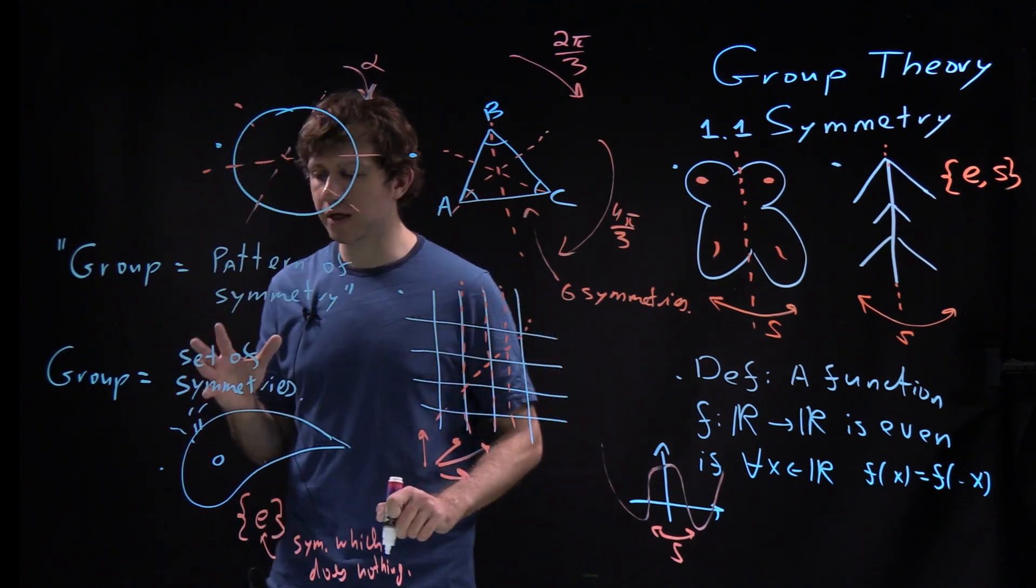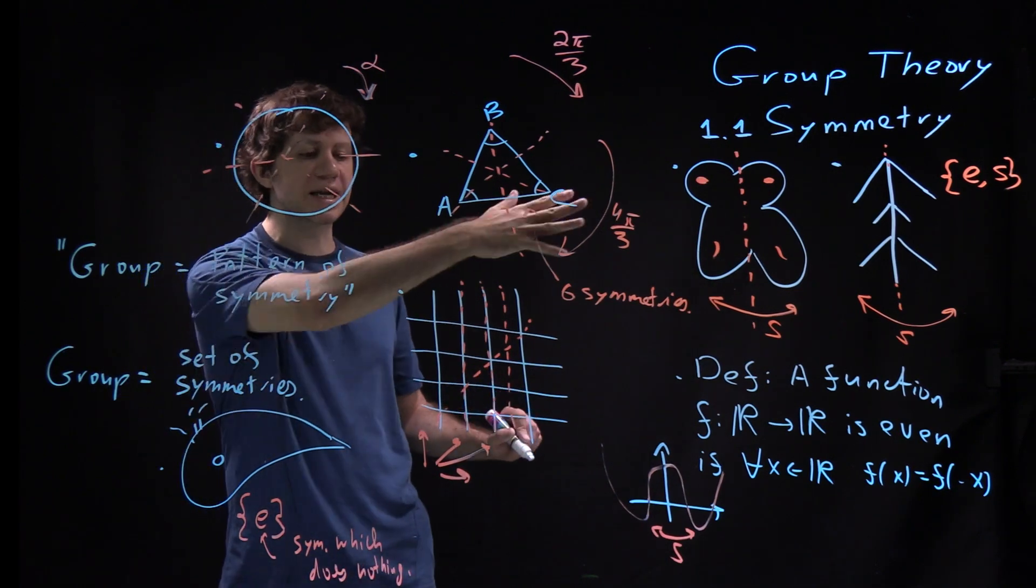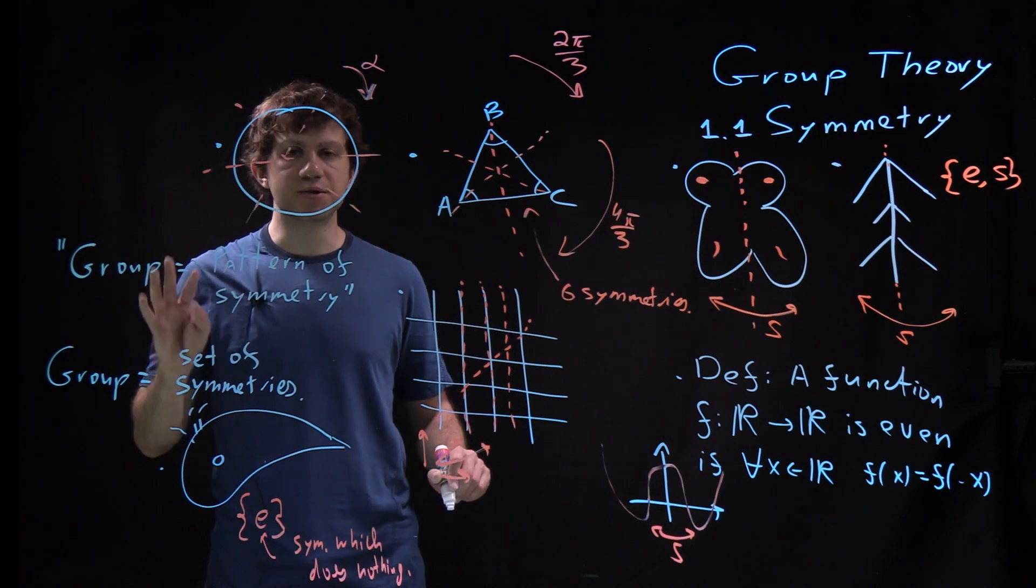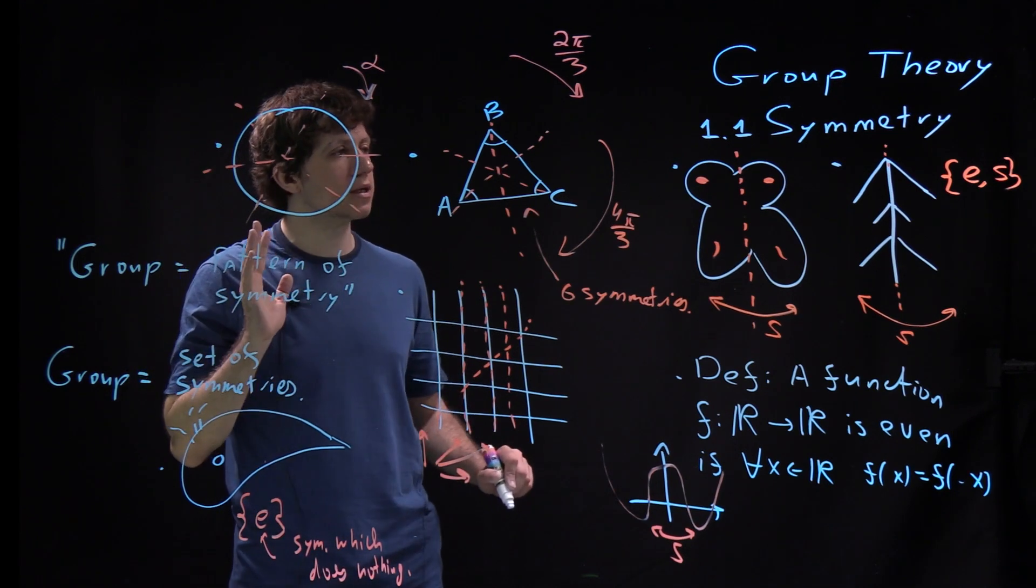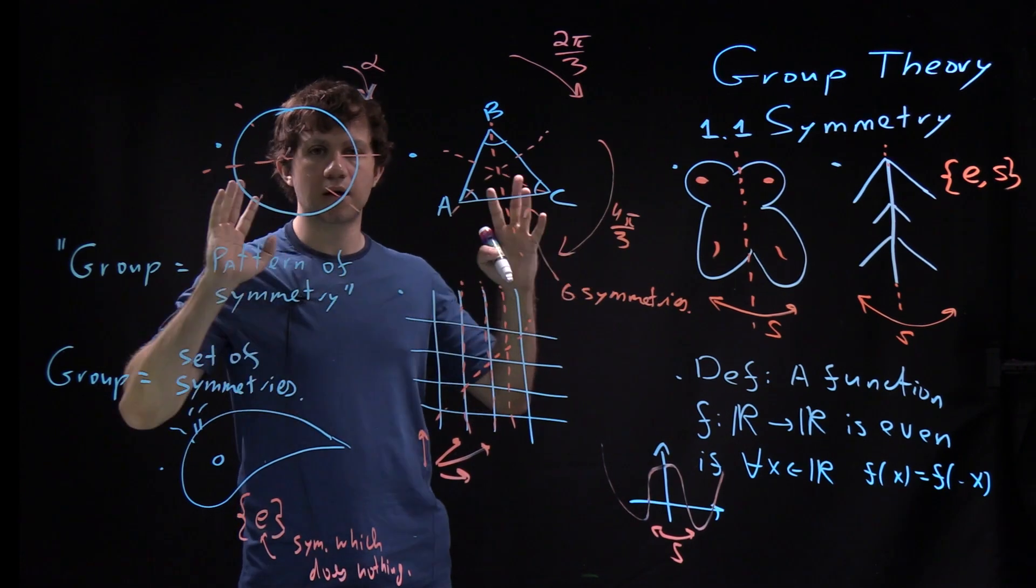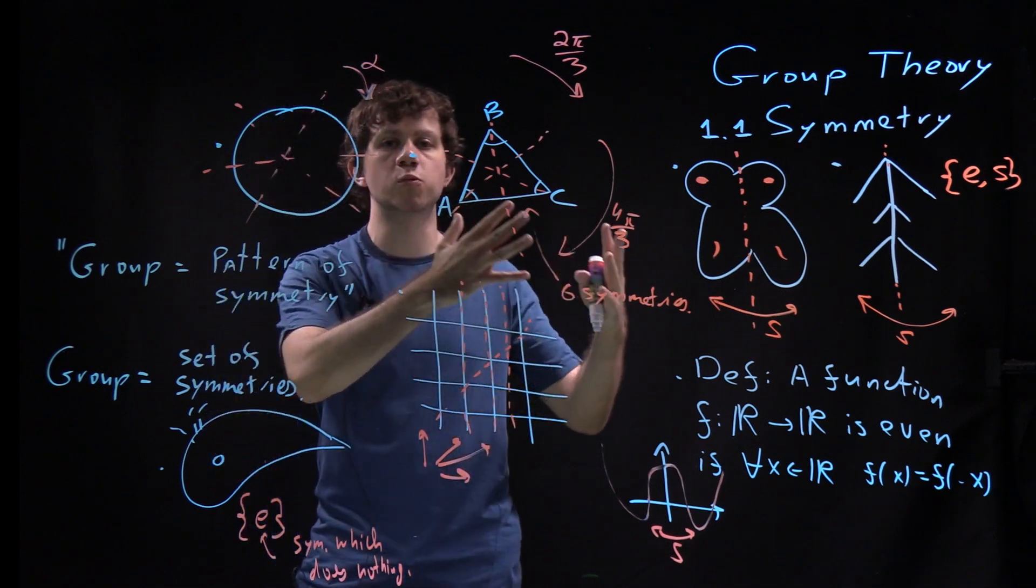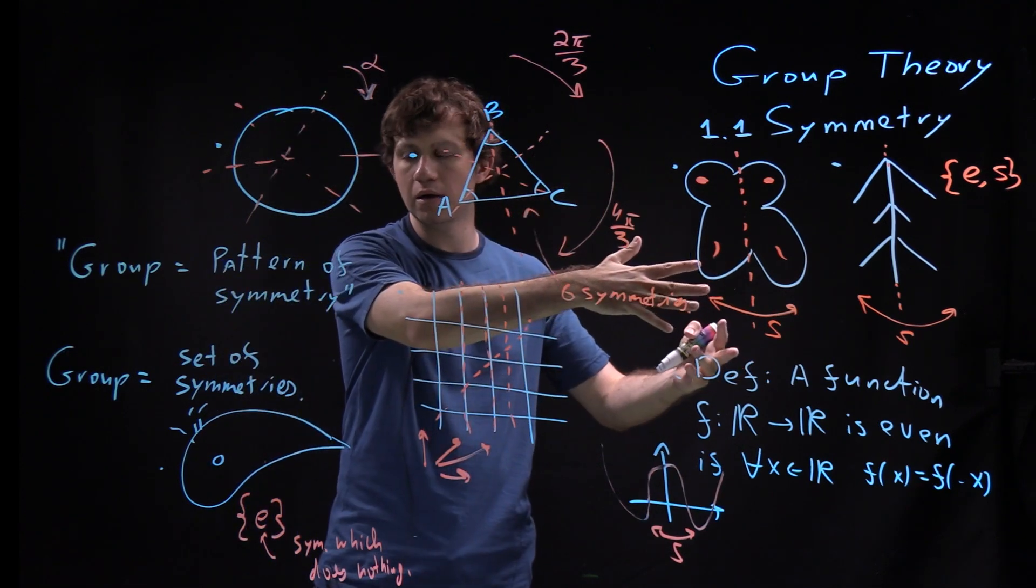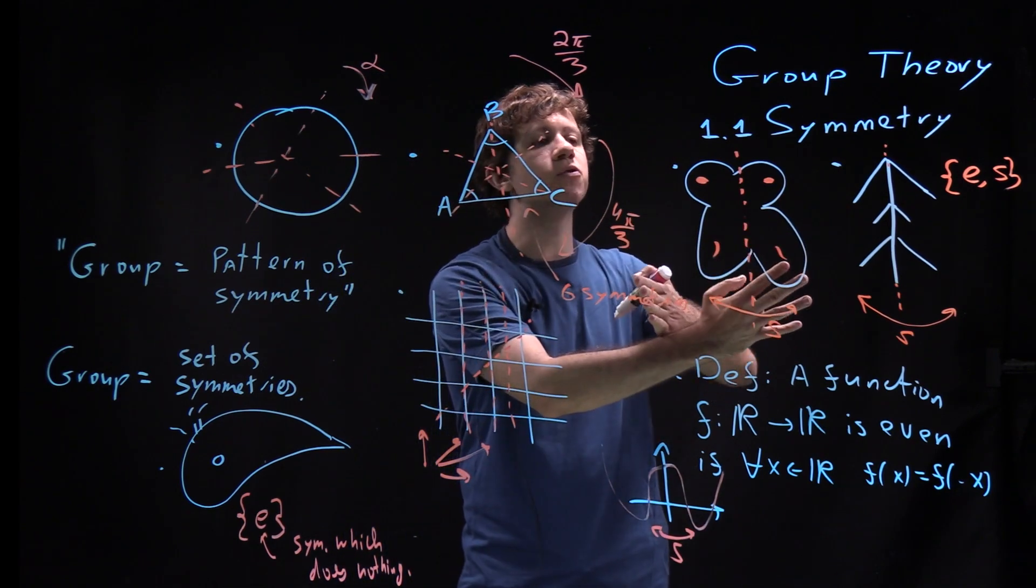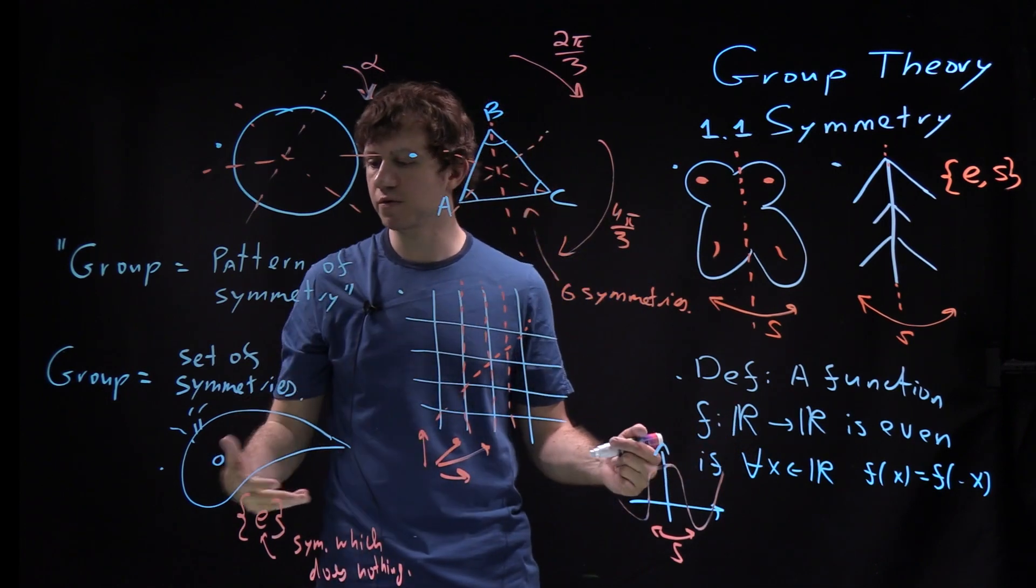But let me preliminarily explain what it is. If you look at any of these objects and look at any particular symmetry, there is the following interesting observation you can make. The observation is: if you have a symmetry and another symmetry, you can do their composition. You can do first one, then the other. So for instance, here you can do this reflection and then do a reflection again.